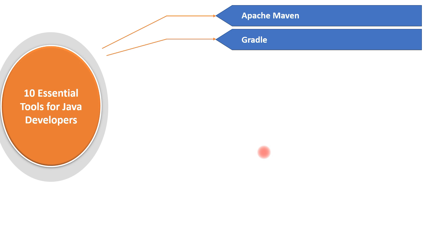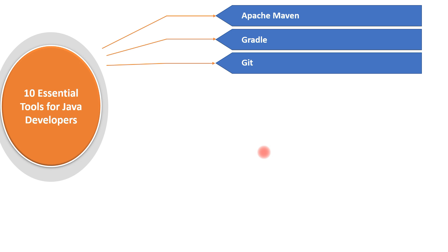The next tool is Git. Git is a free and open source distributed version control system designed to handle everything from small to very large projects with speed and efficiency. Real-time projects generally have multiple developers working in parallel, so they need a version control system like Git to avoid code conflicts. A version control system also allows developers to revert to older versions of their projects and track changes over time.